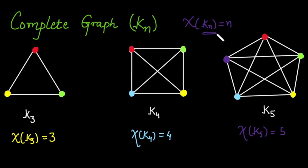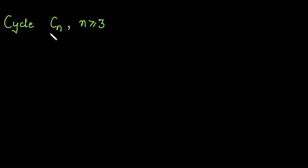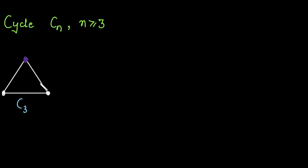Now let's determine the chromatic number of cycle graphs Cn for different values of n, where n is greater than or equal to 3. For C3, we assign the first vertex purple, the second vertex yellow (adjacent to the first), and the third vertex must be a third color green since it is adjacent to both. Three colors are required, so the chromatic number of C3 is 3.